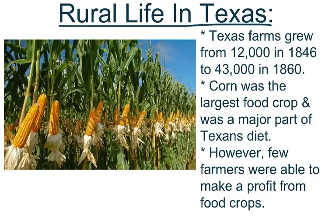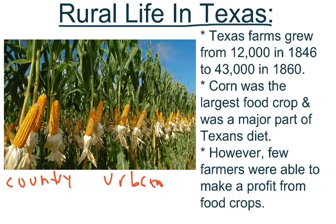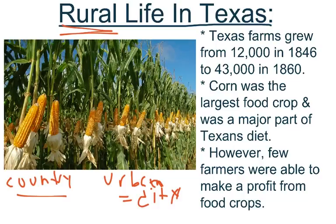The first thing we're going to talk about today is rural life in Texas. Rural means that you live out in the country, as opposed to being urban, which means in the city. Texas farms grew from 12,000 in 1846 to 43,000 in 1860.